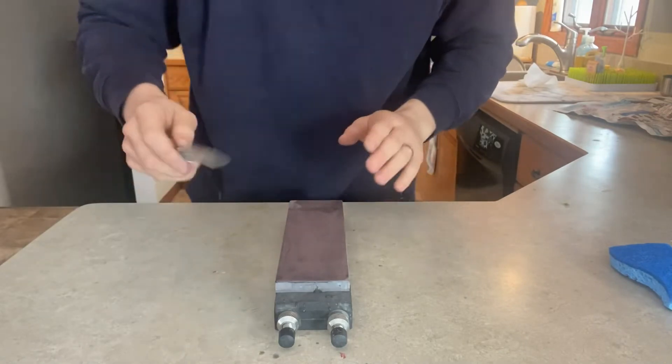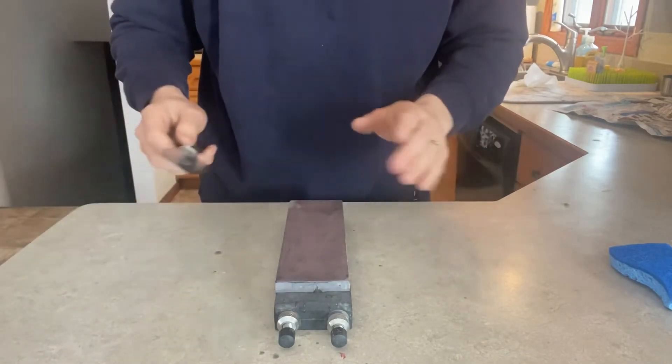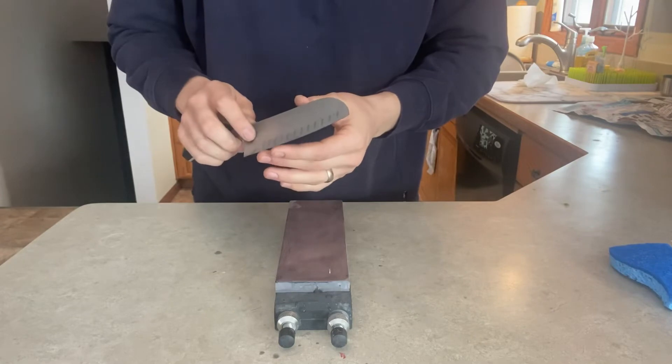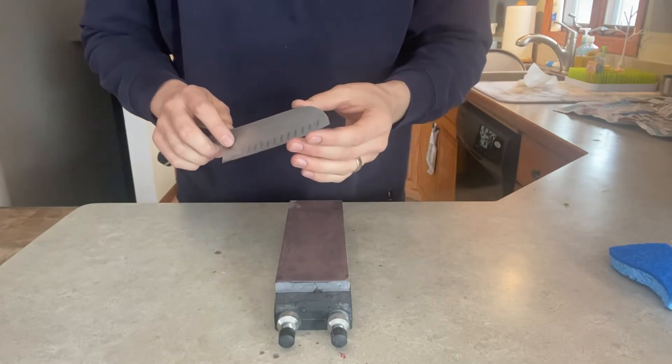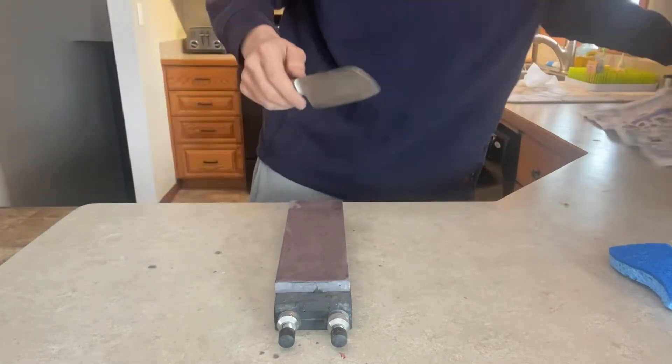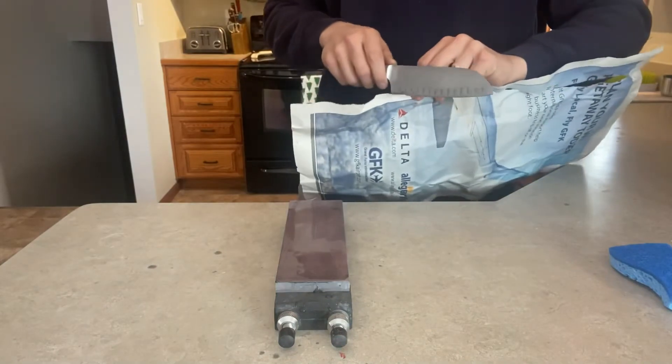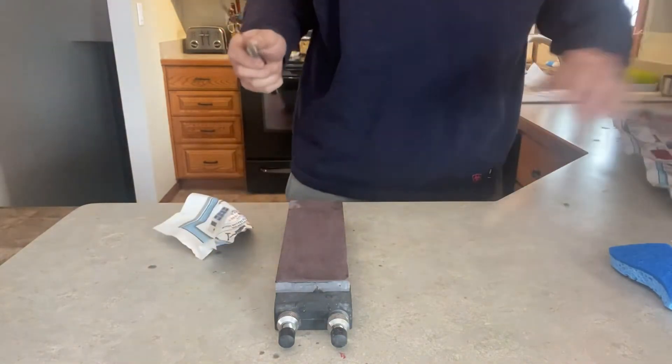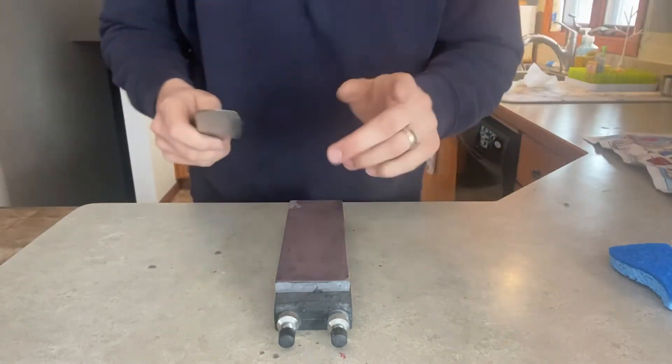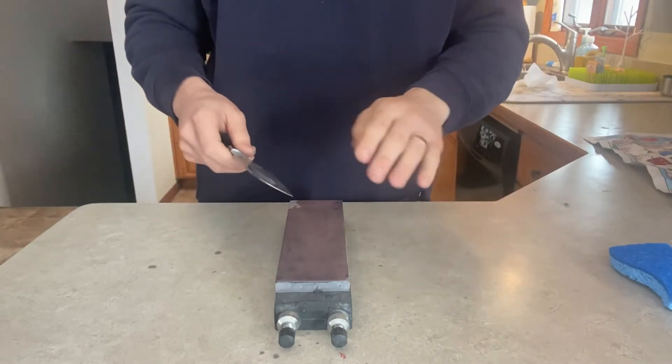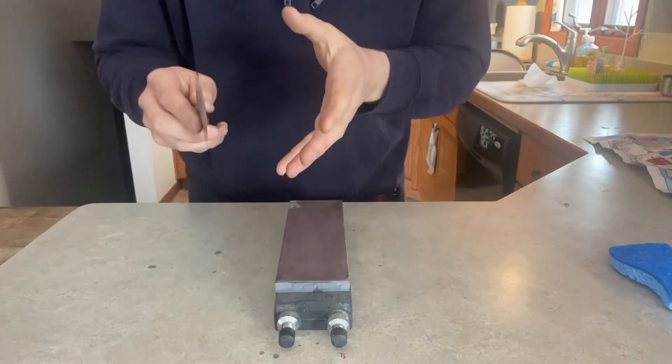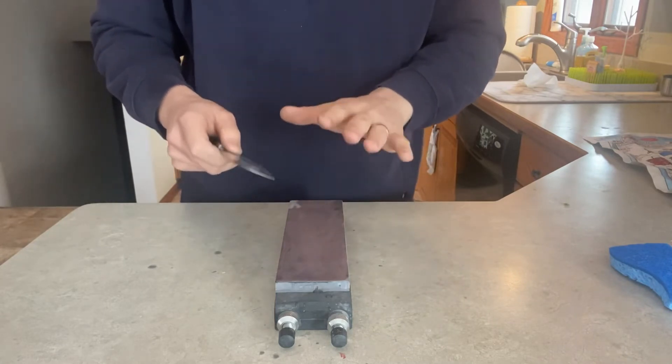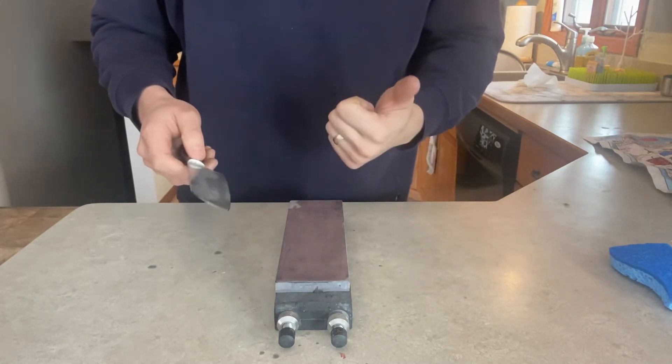So with soft steel like this, you can do those motions all day long and you'll never fully deburr. When it feels sharp, you know it'll look sharp too, but there is still burr. So let's take care of that. So we've alternated sides to minimize that burr and refine it as much as possible, but now we got to get rid of it.